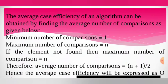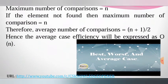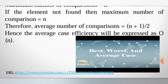The average case efficiency of an algorithm can be obtained by finding the average number of comparisons. The minimum number of comparisons is 1 and the maximum is n. If the element is not found, the maximum number of comparisons is n. Therefore, the average number of comparisons is equal to n plus 1 by 2, and the average case efficiency is expressed as O of n. With this we conclude this topic and I will continue with the next topic in the next session.